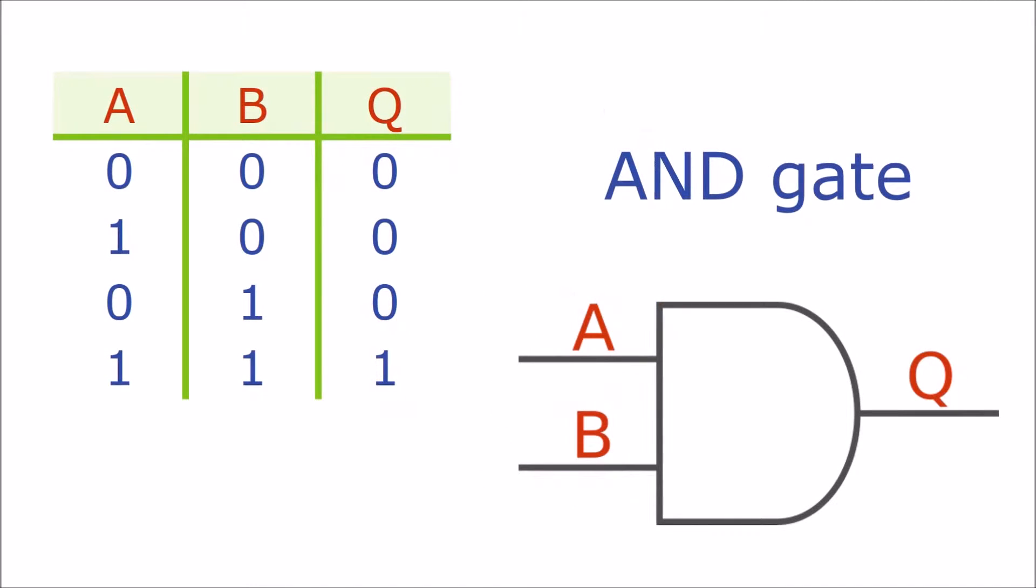Here is the truth table and symbol for an AND gate. As its name implies, the output is only one if both inputs are one. The truth table shows the output value Q for every possible combination of inputs A and B.